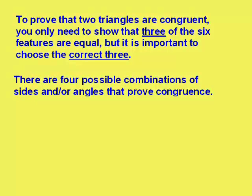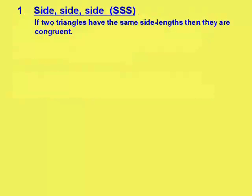Now, there are four possible combinations of sides and/or angles that can prove congruence. Let's just have a look at them quickly in turn.